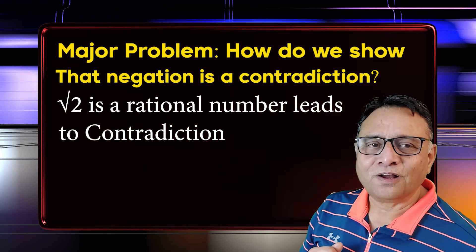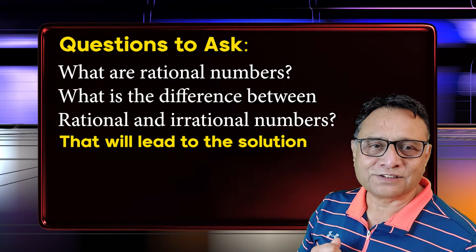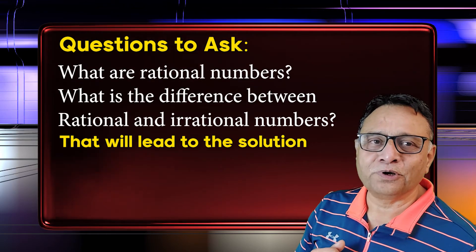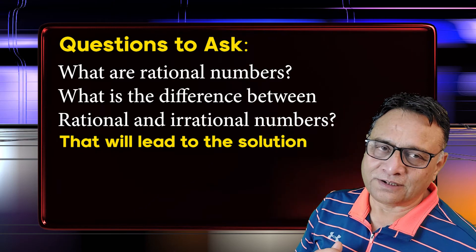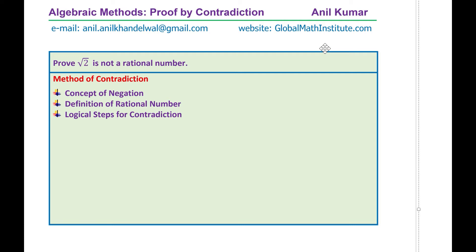Let us see how we prove that the square root of 2 is not a rational number. We will follow the logic to help you understand the process. I hope you find it interesting. Here is a very important question from a test point of view. We are going to use the algebraic method to prove by contradiction. The question is: prove that square root 2 is not a rational number.